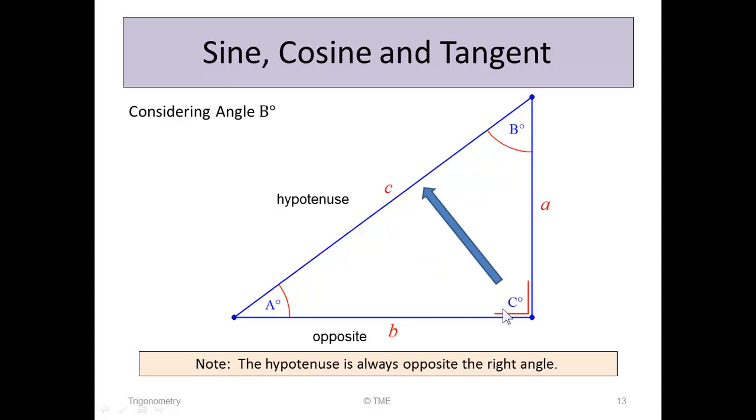The hypotenuse, as before, is opposite the 90-degree angle. And the adjacent, in this case, is the one that touches angle B but that's not the hypotenuse. So for angle B, B is the opposite, A is the adjacent, and C is the hypotenuse.